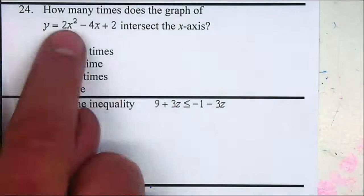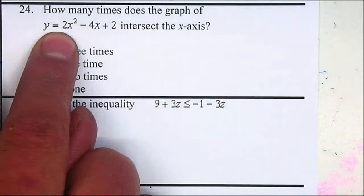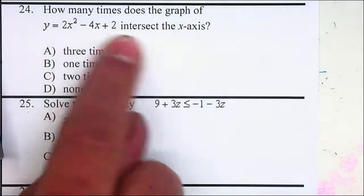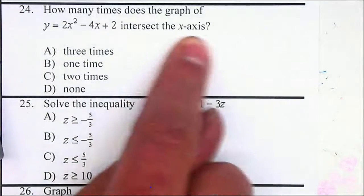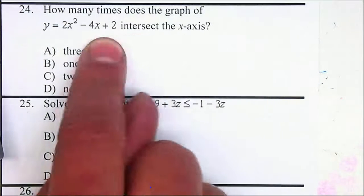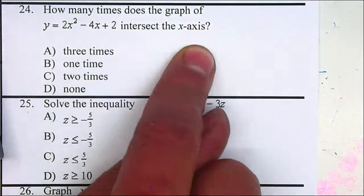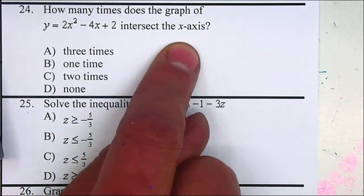How many times does the graph of y equals 2x squared minus 4x plus 1 intersect the x-axis? We want to find out how many times it crosses the x-axis, not where, but just how many times.